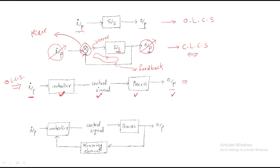In the open loop system, we simply vary the input and get the output with no monitoring of the output. In the closed loop system, we monitor the output, which is why it is called a closed loop control system. Practically, the open loop control system has a controller that generates a control signal applied to a process to generate the output.